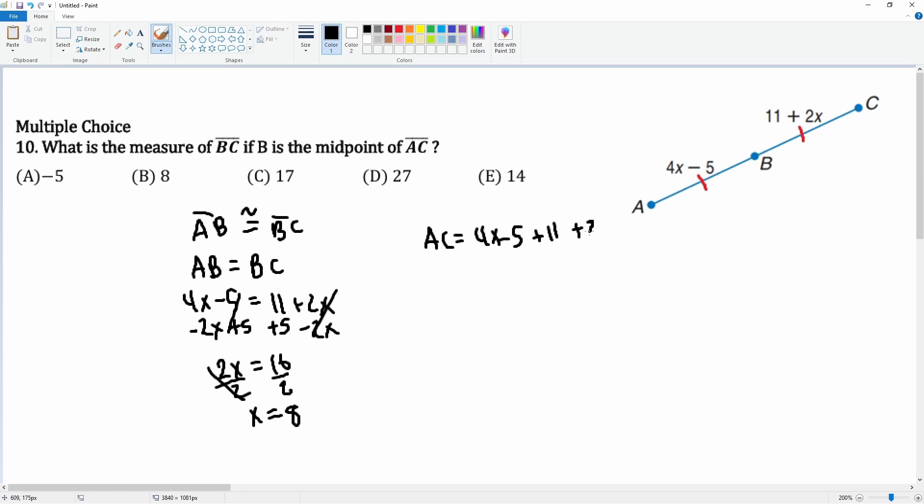So 4x plus 2x is 6x, minus 5 plus 11 is plus 6. AC is equal to 6 parentheses 8 plus 6. 6 times 8 is 48 plus 6 is 54. That's what AC is.